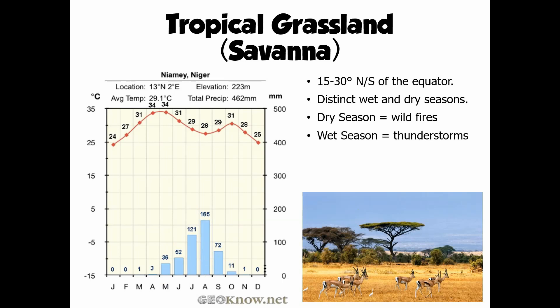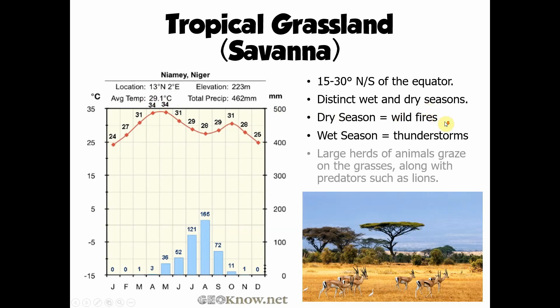In the wet seasons, thunderstorms are quite likely to happen. Looking at the average temperature, it's actually up there with the same sort of temperature found in the rainforest — so these are very warm regions as well. If you've ever watched The Lion King, you'll know the kind of environment we're talking about: low-growing grasses, occasional trees, and lots of herds of grazing animals like antelope, along with the predators that feed on them like lions.